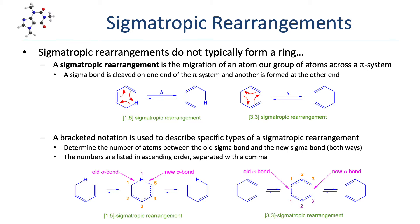In the first example, a hydrogen atom migrates across a carbon pi system. The transition state in the center shows the sigma bond being cleaved and the new sigma bond being formed as dashed lines. Starting from the old sigma bond and moving clockwise, we see only a single hydrogen atom before encountering the newly formed sigma bond. Moving counterclockwise, we see five carbon atoms before encountering the newly formed sigma bond. The two paths contain one atom and five atoms, so the rearrangement is described as a 1,5-sigmatropic rearrangement.